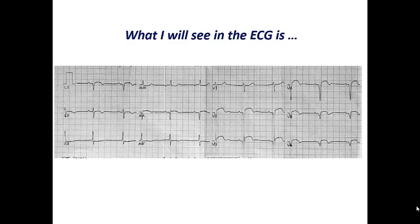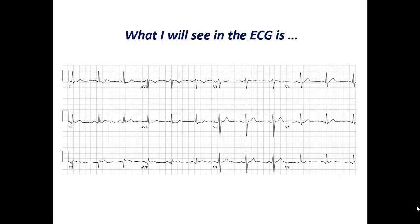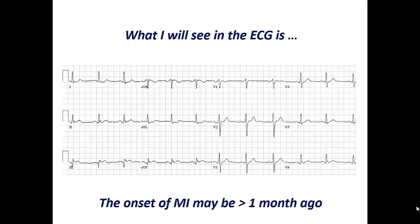Here I can also see ST elevation from V1 to V4, and if I ask the patient and know he is chest pain free with a history of MI two months ago, I need to exclude through-wall aneurysm in the LAD territory. In this ECG I can see ST elevation in the inferior leads. If the onset of MI was more than one month ago and the patient is chest pain free, I expect an aneurysm in the RCA or LCX territory — in the inferior wall or perhaps the lateral wall.